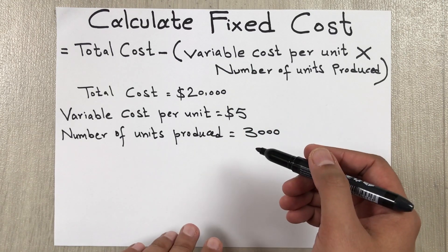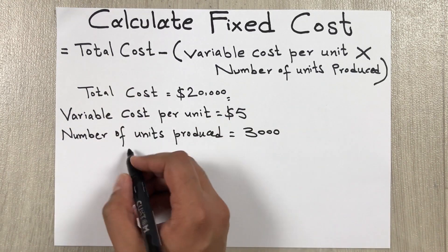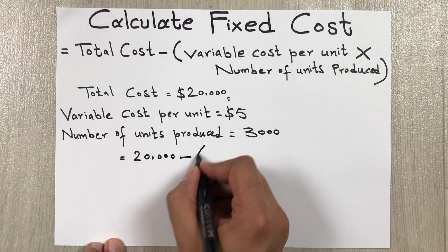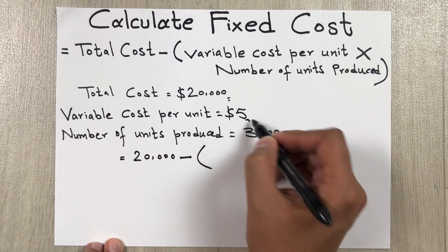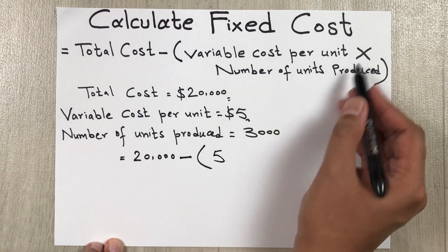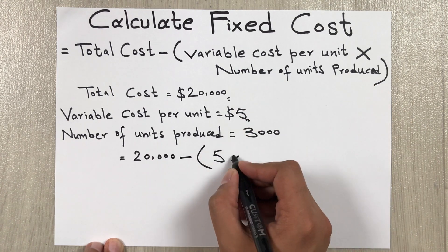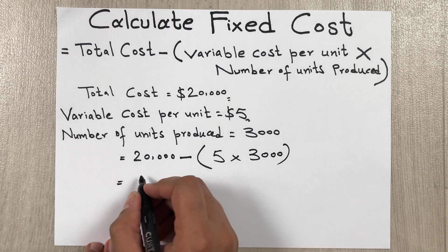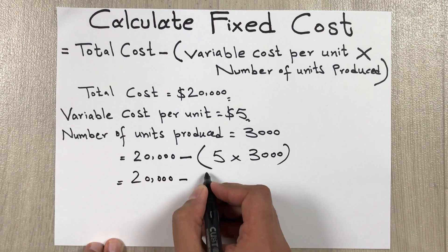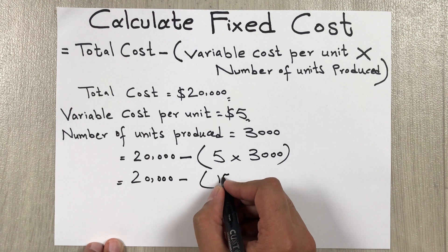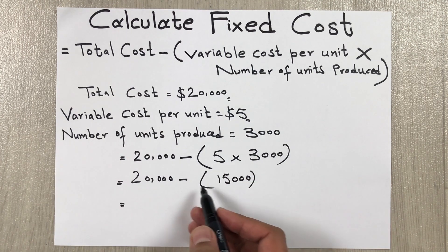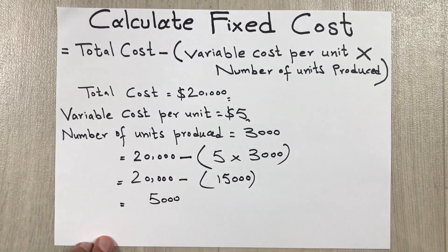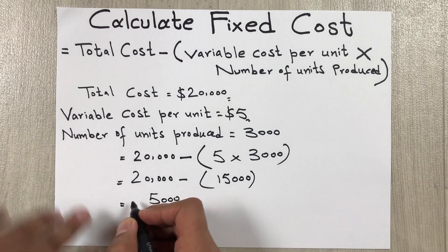Total cost is twenty thousand, so we put twenty thousand, then minus variable cost per unit which is five, multiplied by number of units produced which is three thousand. So twenty thousand minus — when we do this multiplication the answer is fifteen thousand — then we subtract: twenty thousand minus fifteen thousand equals five thousand. So our fixed cost is five thousand dollars.